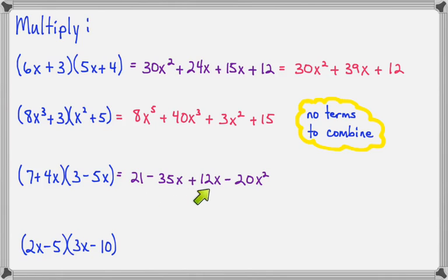Now if we look at our two middle terms, we can combine them. So negative 35 plus 12 will make negative 23, and that's an X term, so negative 23X. So I have 21 minus 23X minus 20X squared. And this is acceptable, but it is kind of traditional, kind of standard for us,